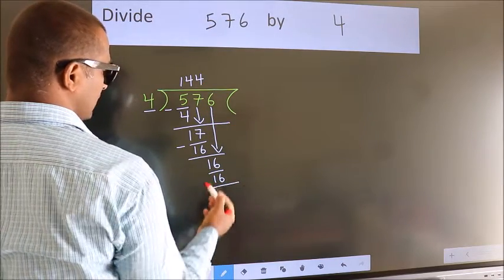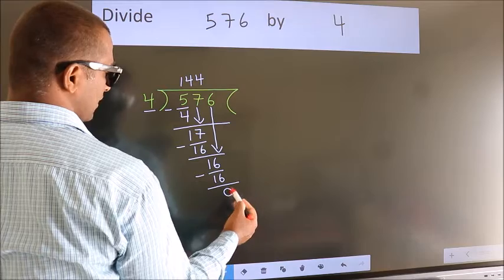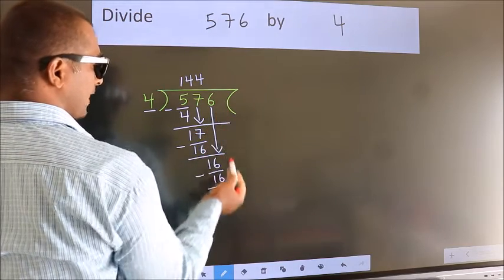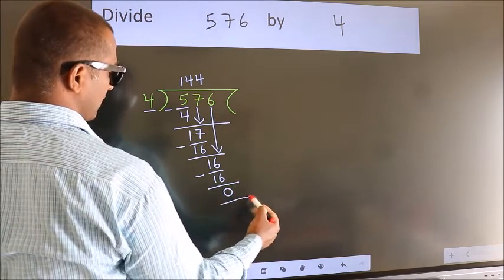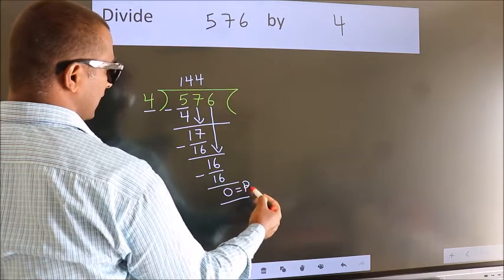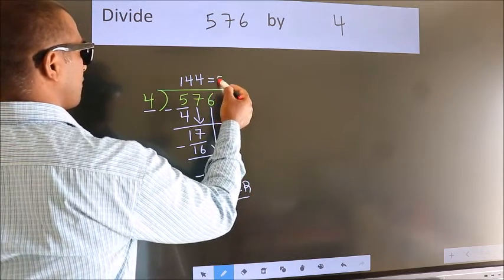Now we subtract. We get 0. No more numbers to bring down. So we stop here. This is our remainder. This is our quotient.